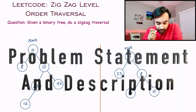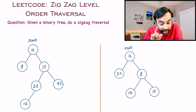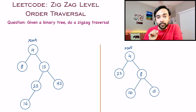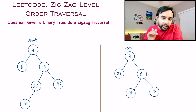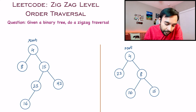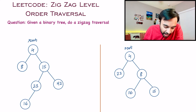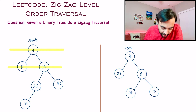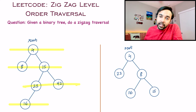In this problem you are given a binary tree and you have to do a zigzag level order traversal. What does level order traversal actually mean? When you're doing a level order traversal, you are iterating the first level: 4, then 8 and 15, then 23 and 42, and then 16.